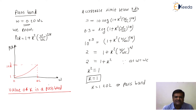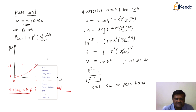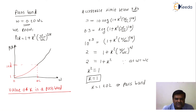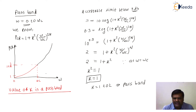Now we will see the response in the attenuation band. When we draw the response in the attenuation band, we see that the response increases continuously. We get an increasing insertion loss in the attenuation band. Keep in mind: if insertion loss increases, it indicates that attenuation also increases — and that is our requirement. In the stop band, attenuation should increase.